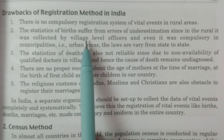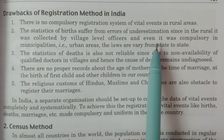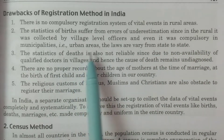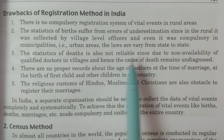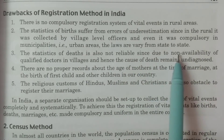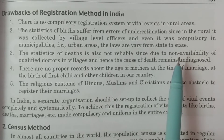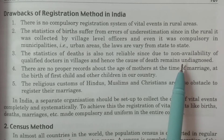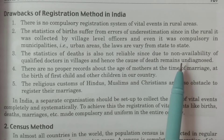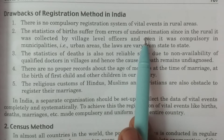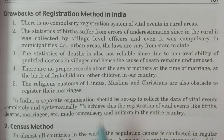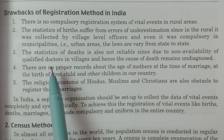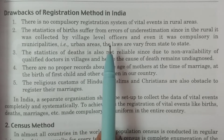The statistics of births suffer from errors of underestimation, since in rural areas data was collected by village-level officers, and even though it was compulsory in municipalities, the laws vary from state to state. Every birth registration is not completed and is going to be underestimated — that is a very important drawback. Every person has to register, but this process is not being done.